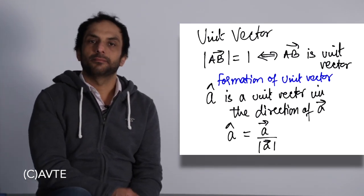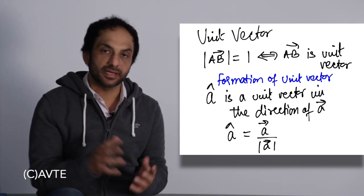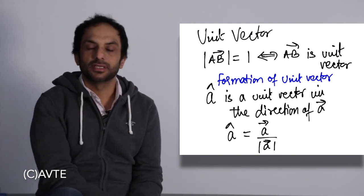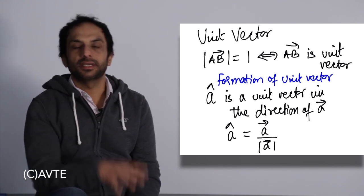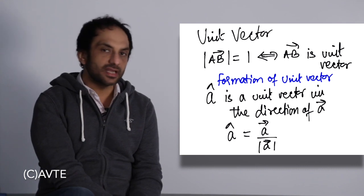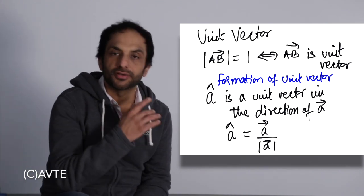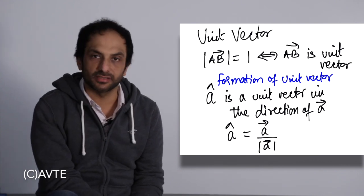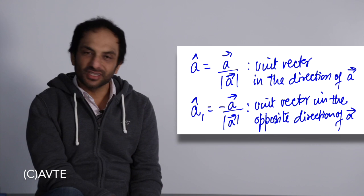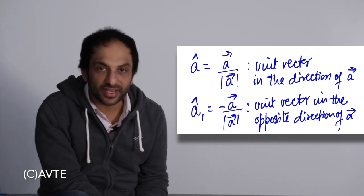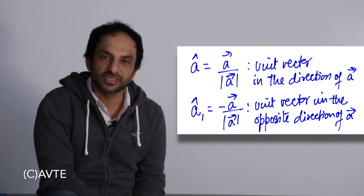A unit vector is a vector whose magnitude is 1. As you can see in the diagram, it is represented with a cap symbol. Whenever we see that symbol, it means the vector's magnitude is 1. We also have a formula to generate a unit vector in the direction of a given vector: if a is any vector, then the unit vector in the direction of a is given by vector a divided by mod of a. You can also have a unit vector opposite to vector a by putting a negative sign. A unit vector is mainly used to convey direction.